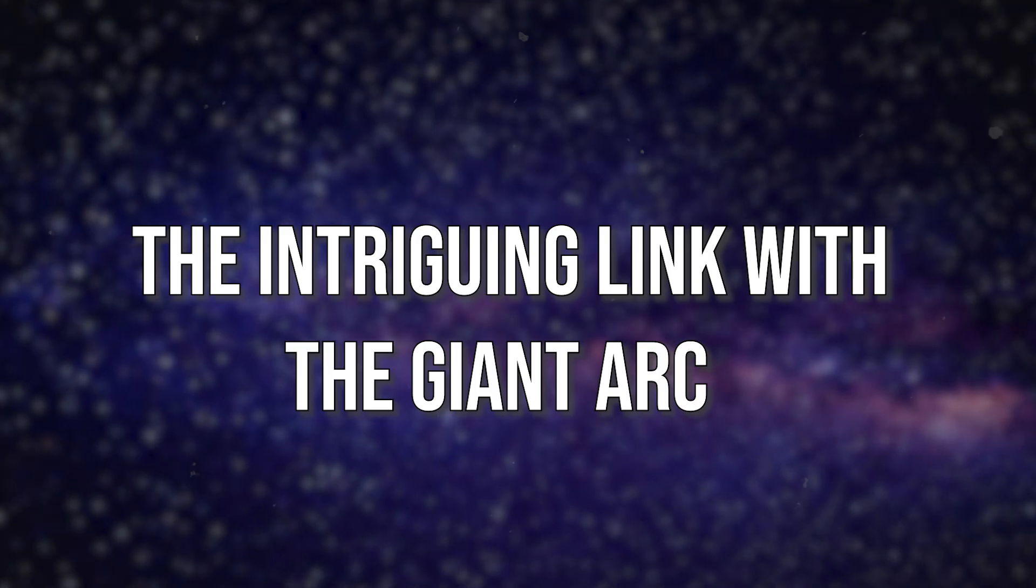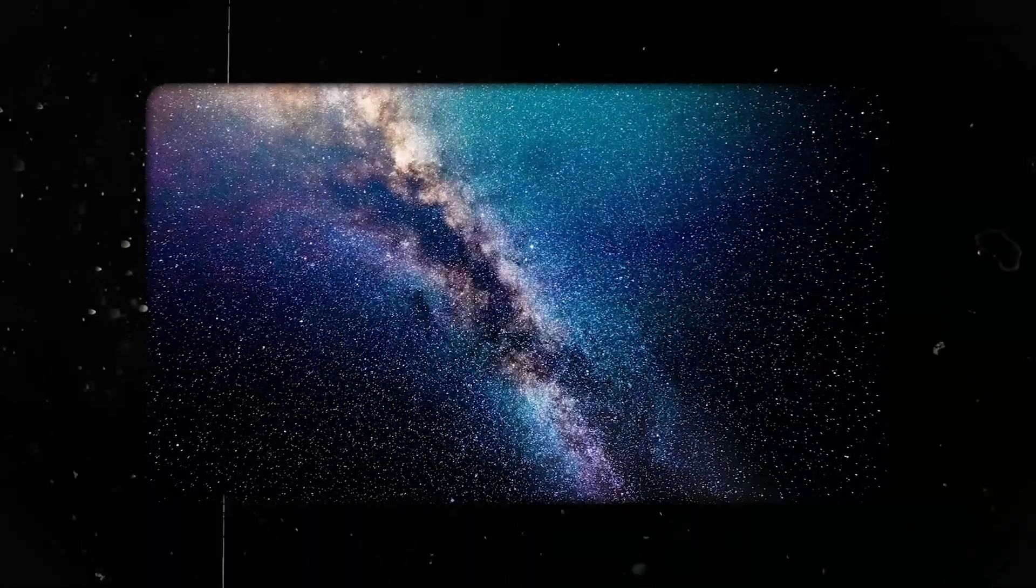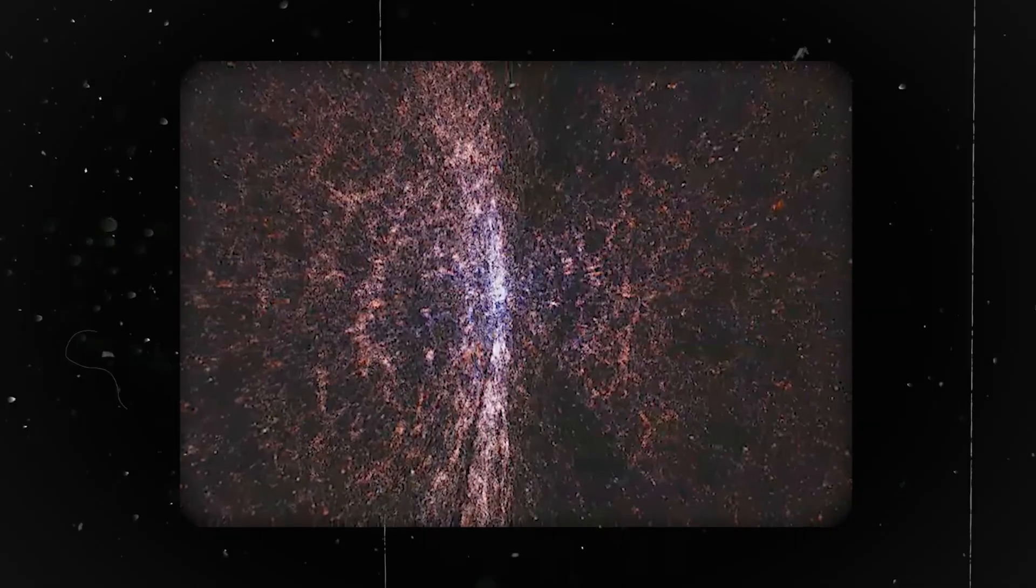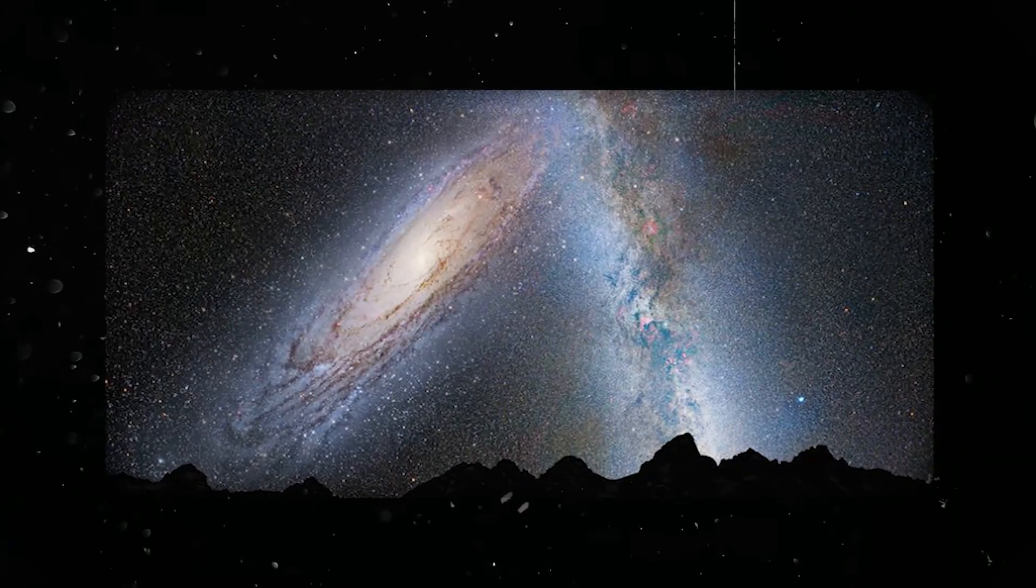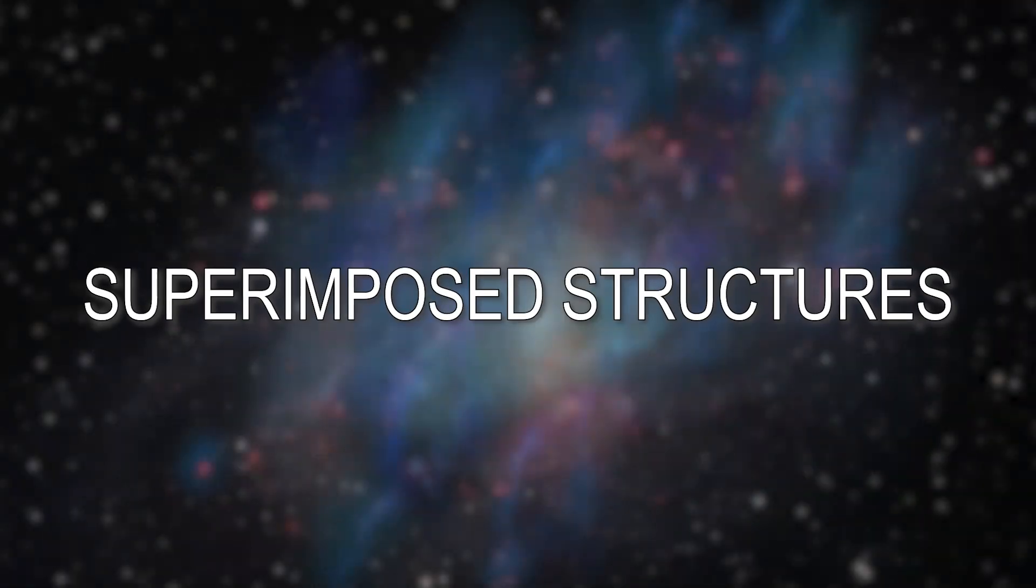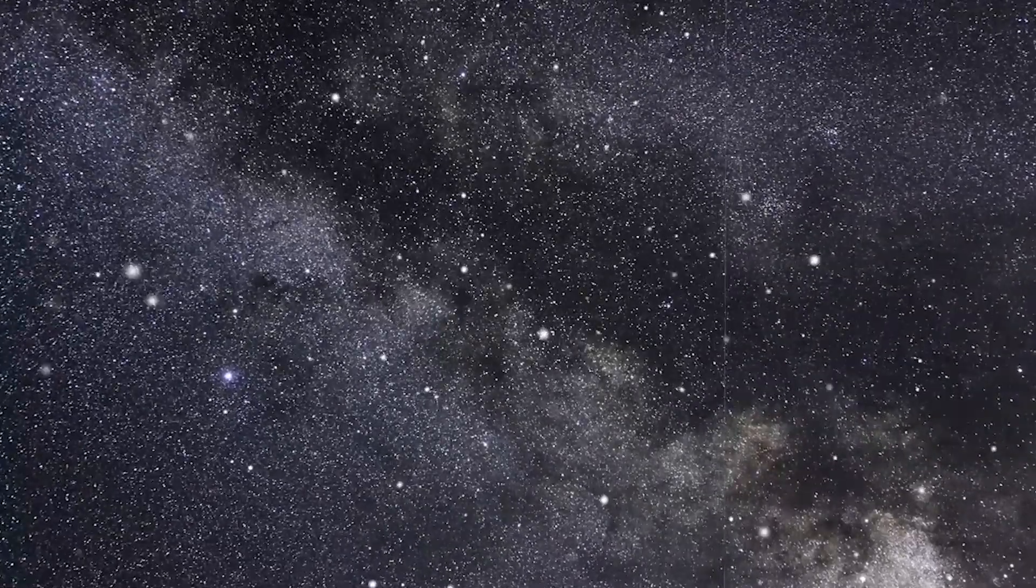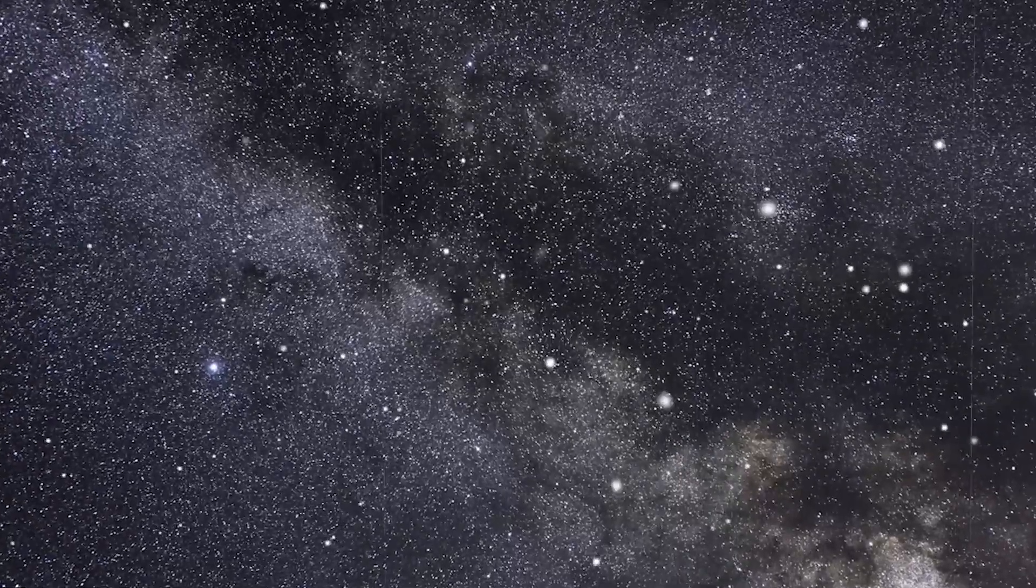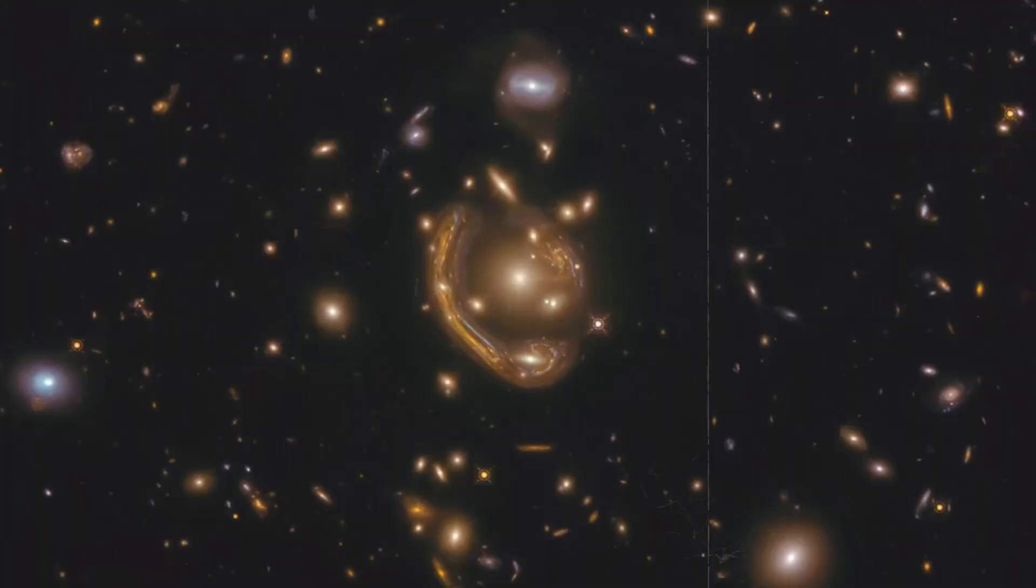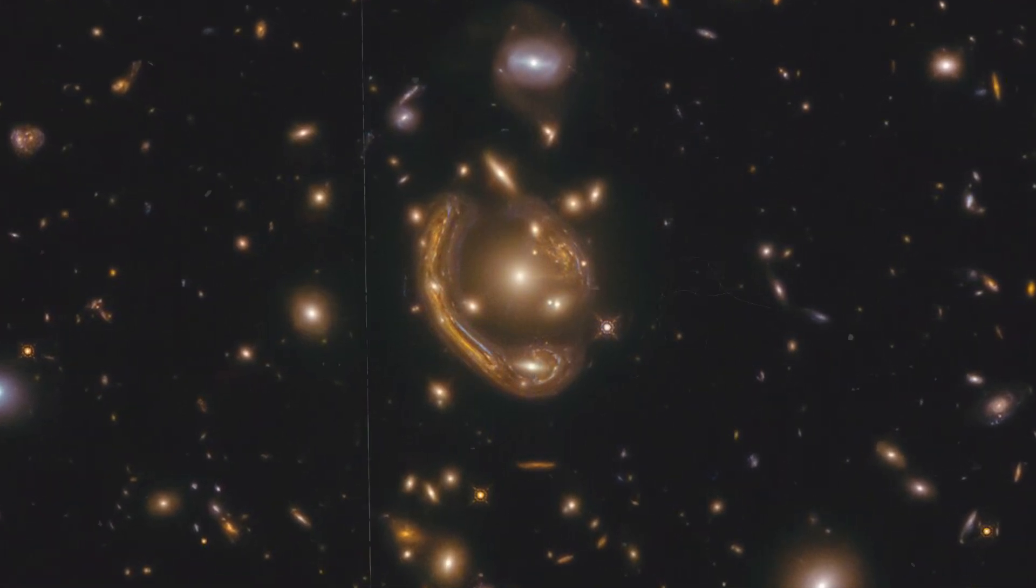The intriguing link with the giant arc. Coincidence or causal connection? The close proximity of the Big Ring and the giant arc might be pure coincidence, or it could indicate a deeper connection in their formation mechanism. Analyzing their spatial distribution and alignment could provide clues about this potential link. Superimposed structures: one proposed explanation suggests that the Big Ring and the giant arc are distinct structures superimposed along our line of sight due to gravitational lensing. Investigating this hypothesis requires detailed studies of their redshift distributions and lensing properties.